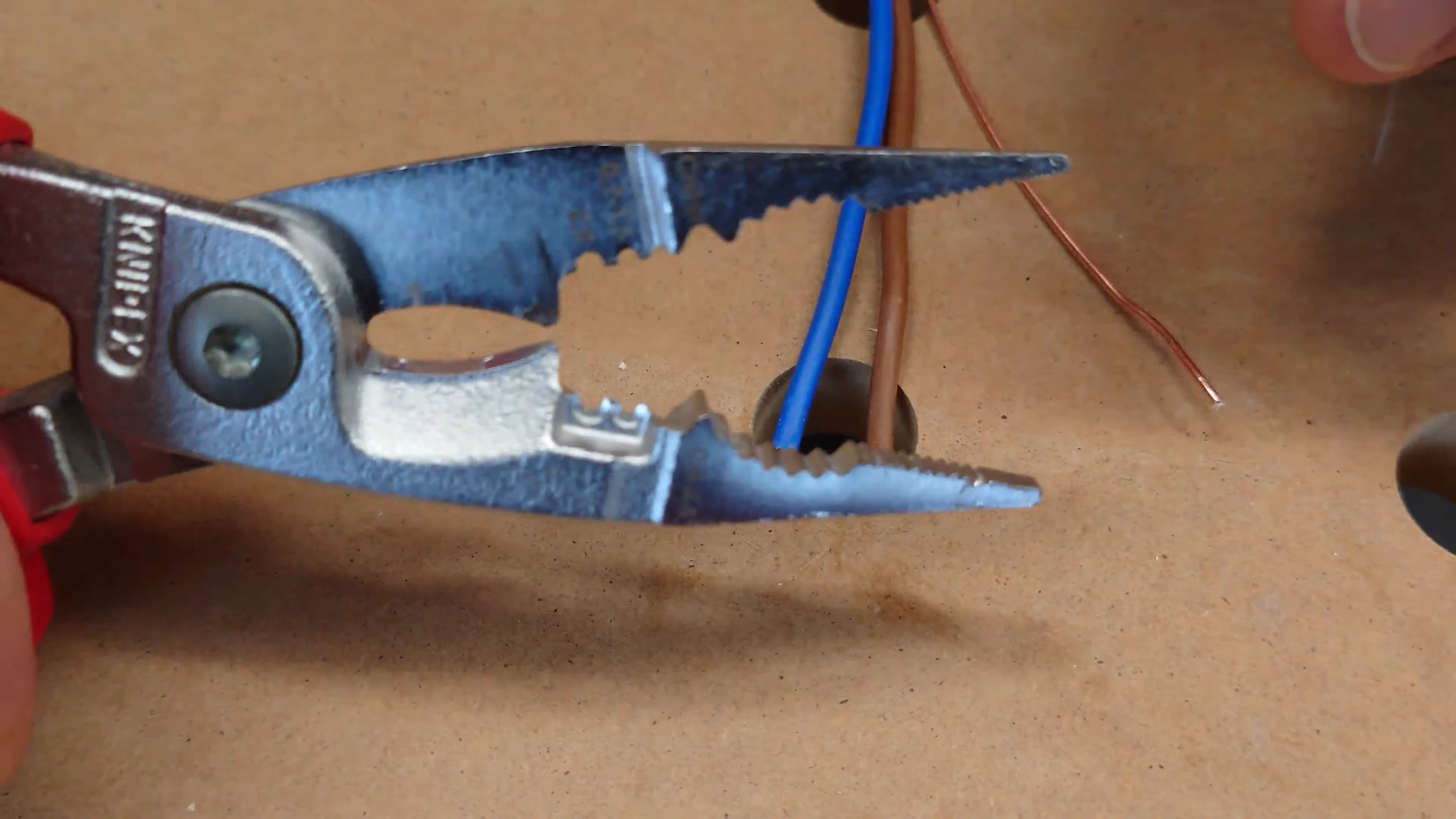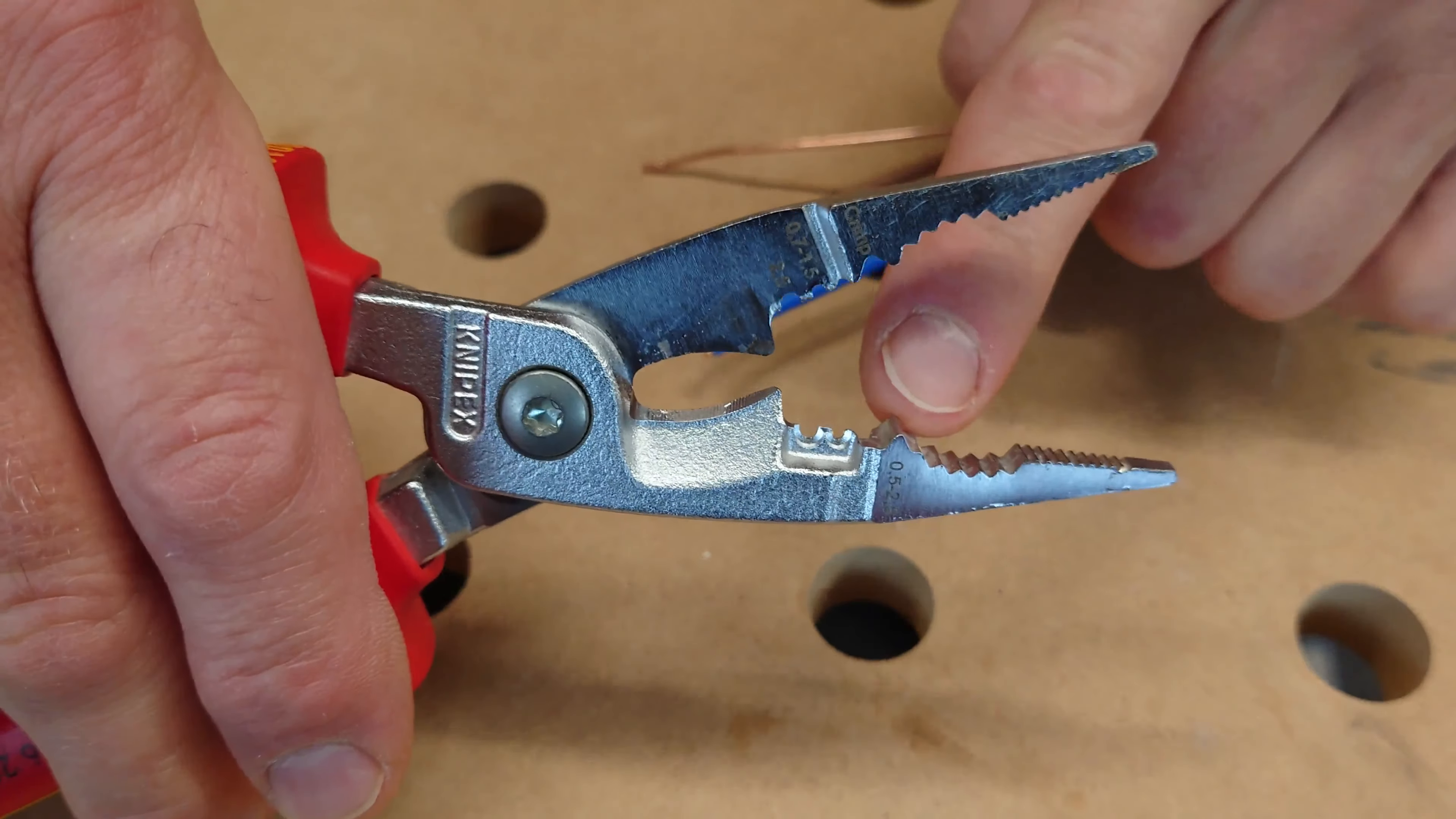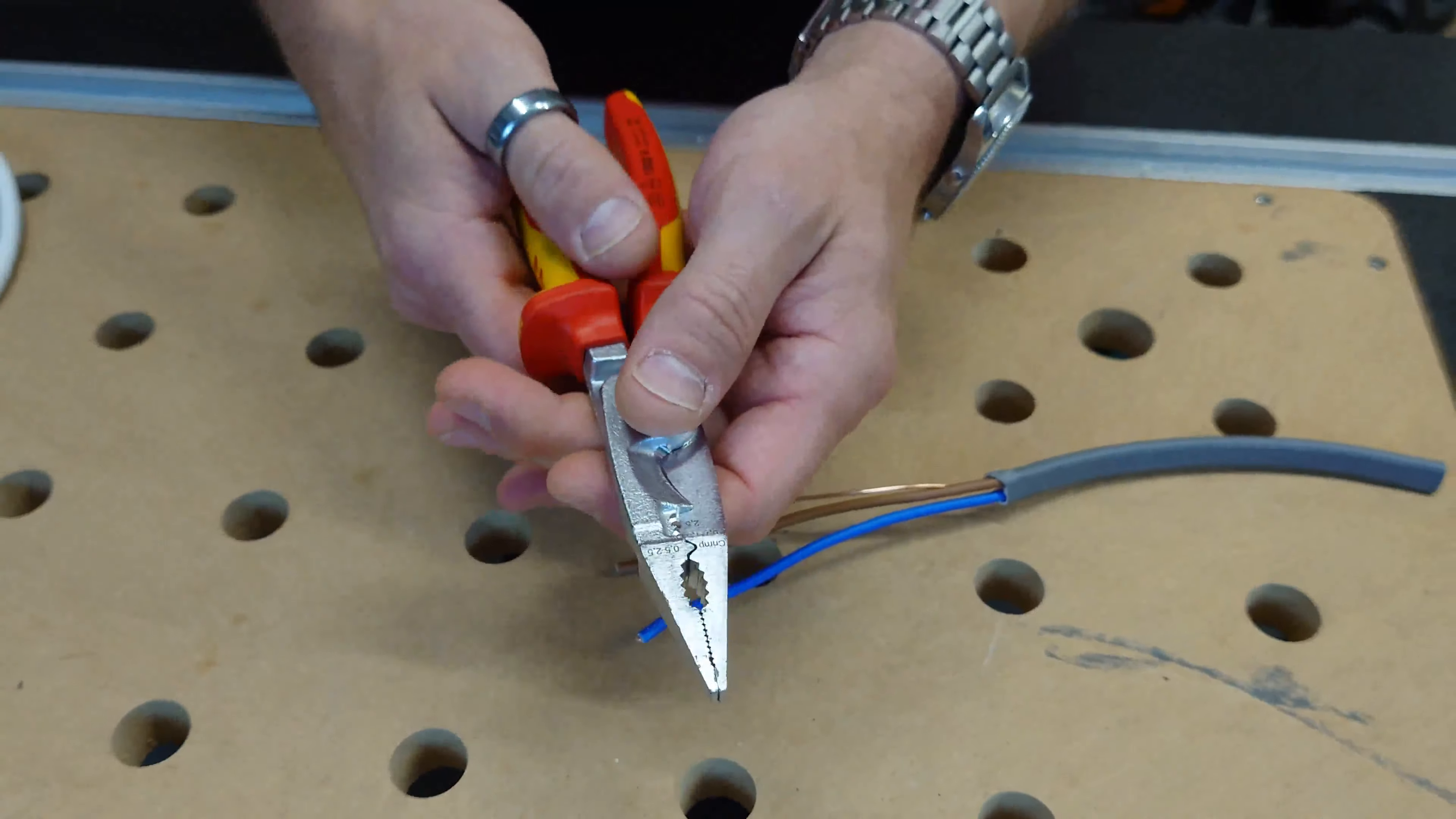Whereas if you do use the teeth, which are serrated, it will leave a mark, but it will add a lot of extra grip. You can see there's got a little mark on there. But you've got the flat teeth there and you've got rounded sections for bigger cables, or if you've got to hold a nut or a bolt, so you can tighten up with a spanner on the other side. Fantastic idea on these.